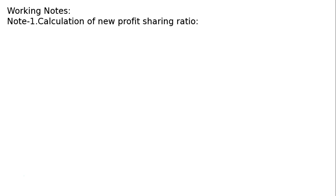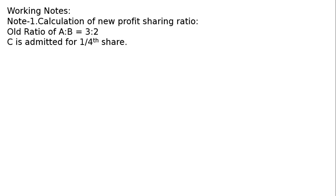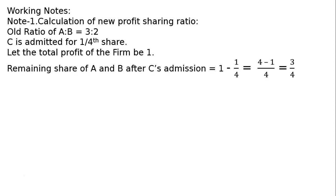Calculation of new profit sharing ratio — Note 1: Old ratio of A to B is 3 is to 2 as given in the first line. C is admitted for one-fourth share, paying ₹20,000 as capital. The total profit of the firm is taken as 1. C takes one-fourth, so the remaining share of A and B after C's admission is 1 minus one-fourth, which gives 3 upon 4.